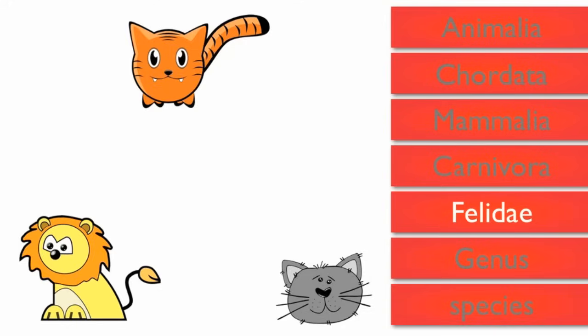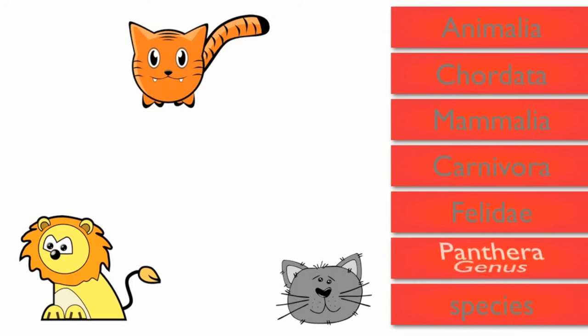Then we have a level called genus. A lion is in the genus Panthera, which means roaring cat. The house cat does not roar, so it is removed.